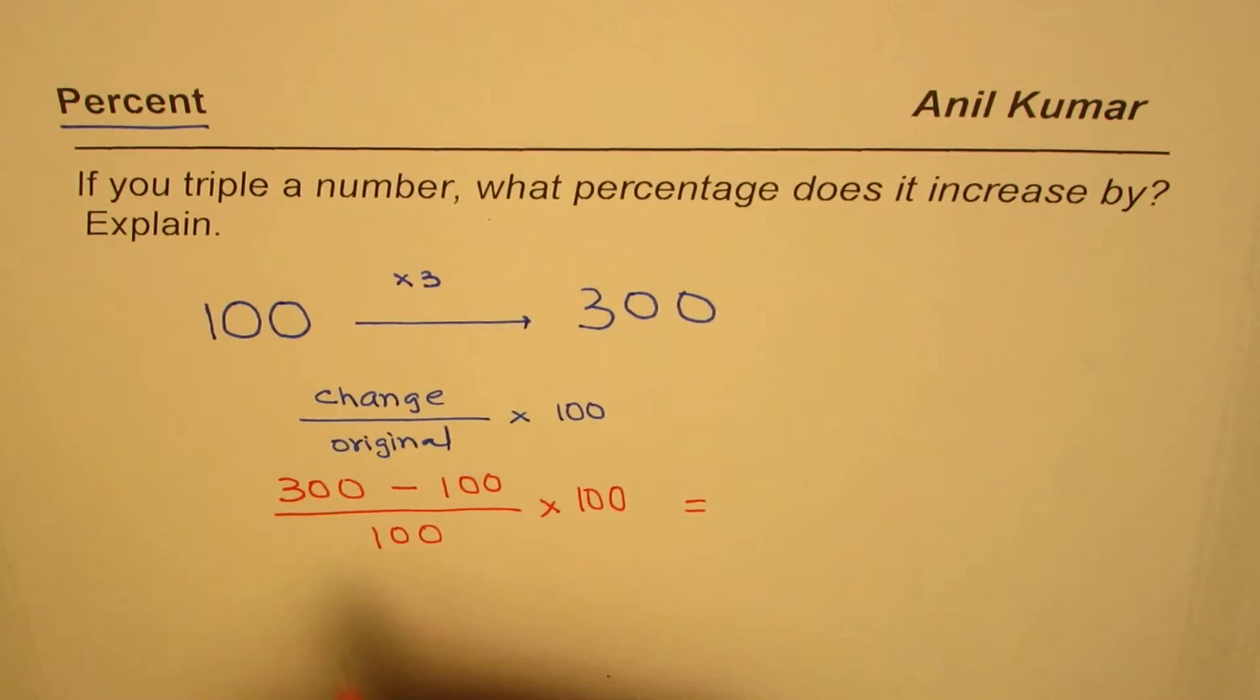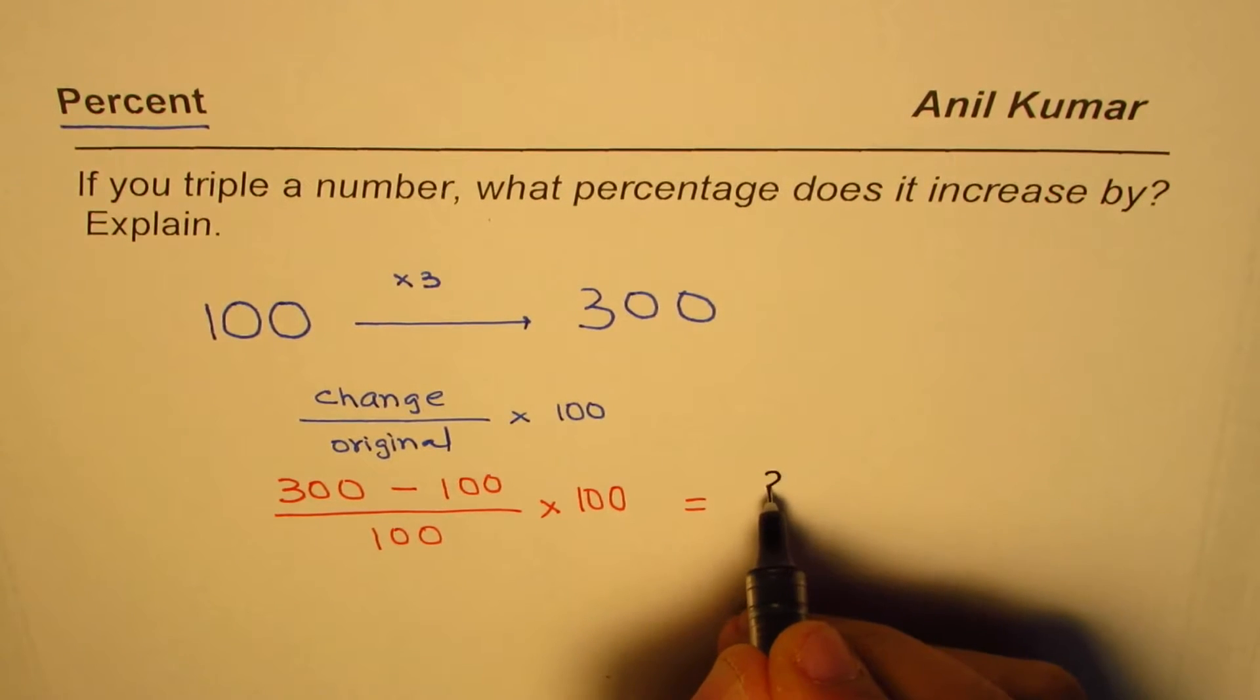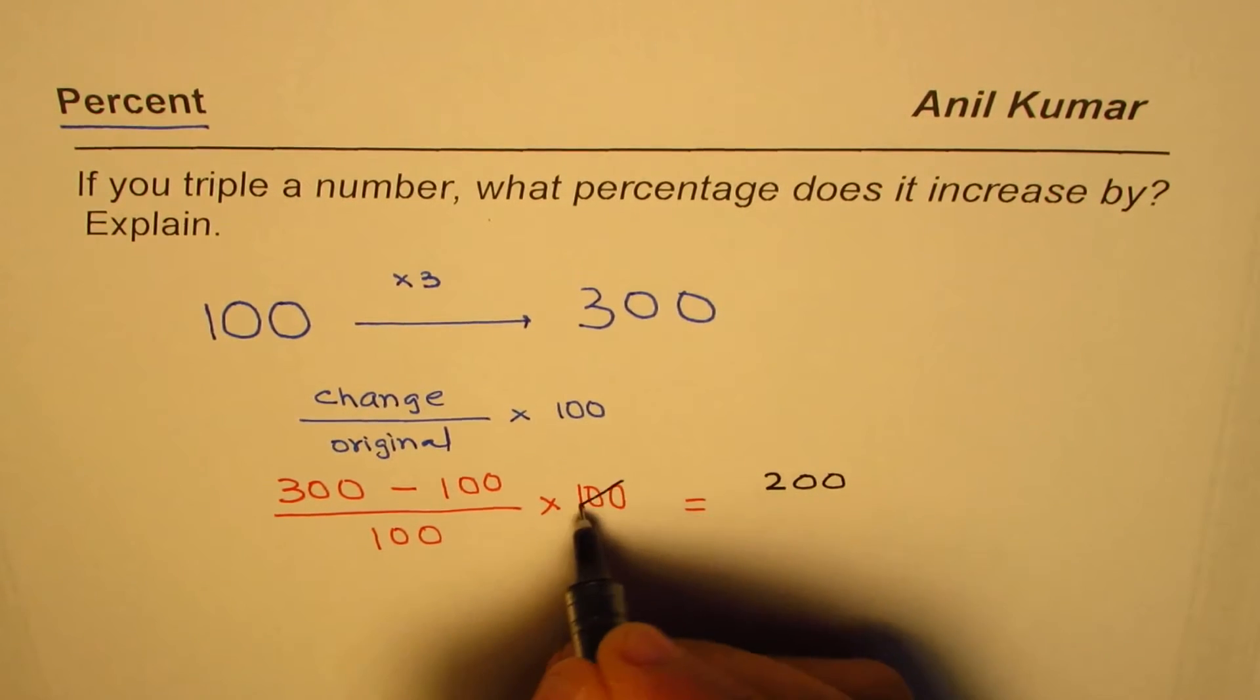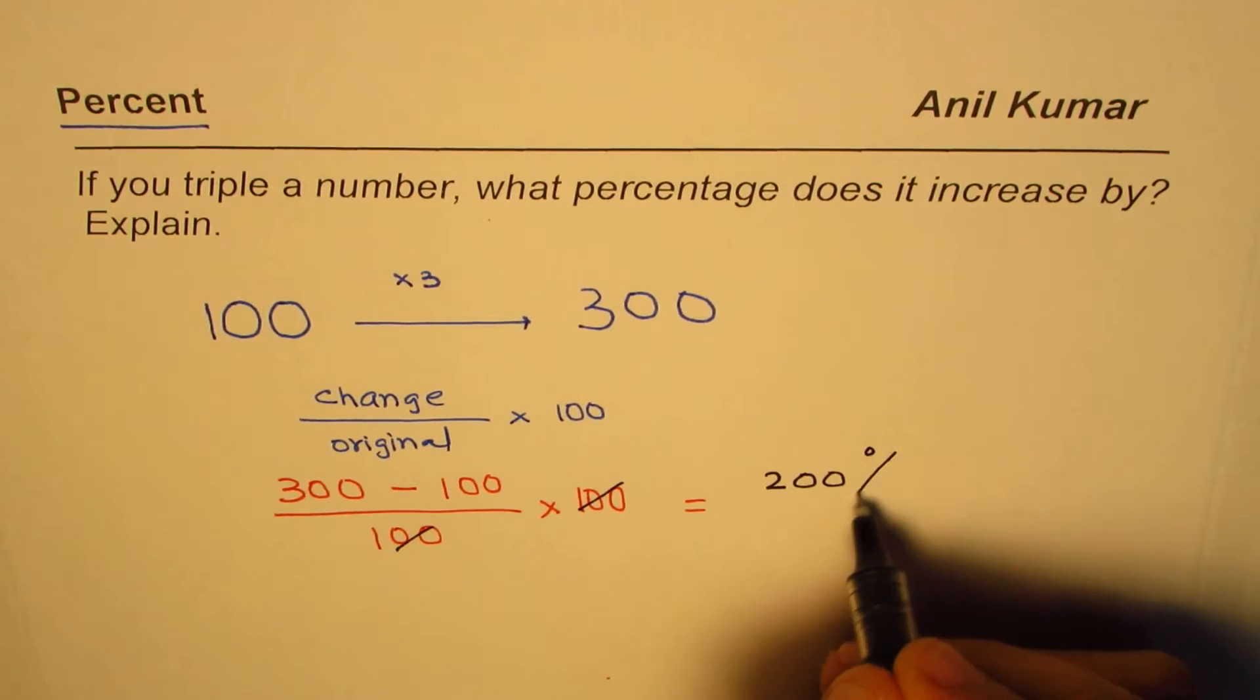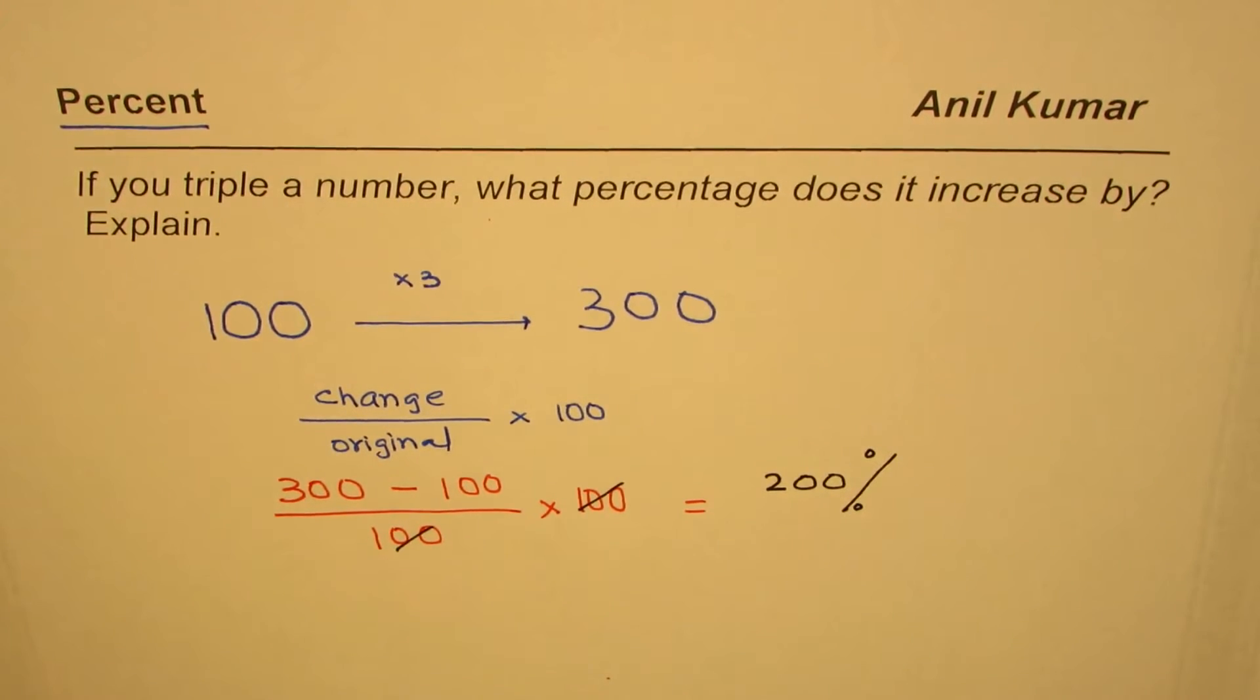This is equal to 300 minus 100 is 200. And this 100-100 kind of cancels. So we get 200% as the change.